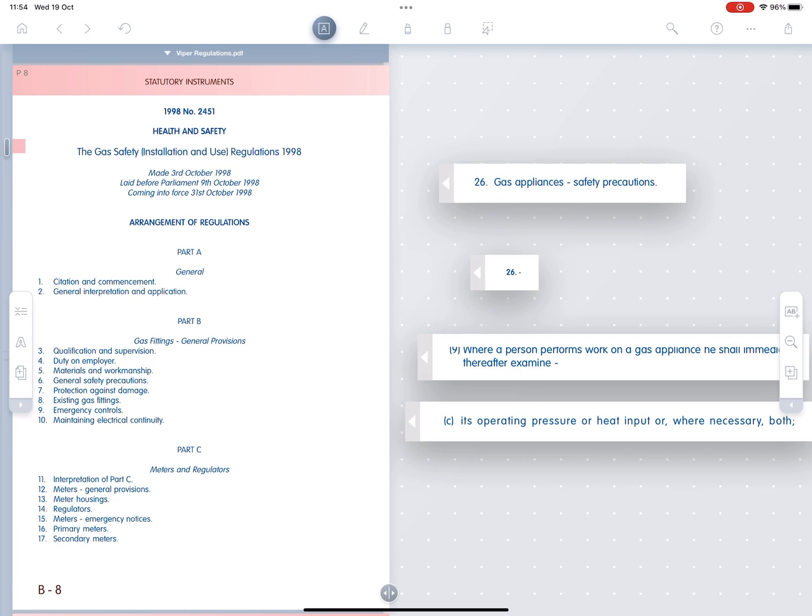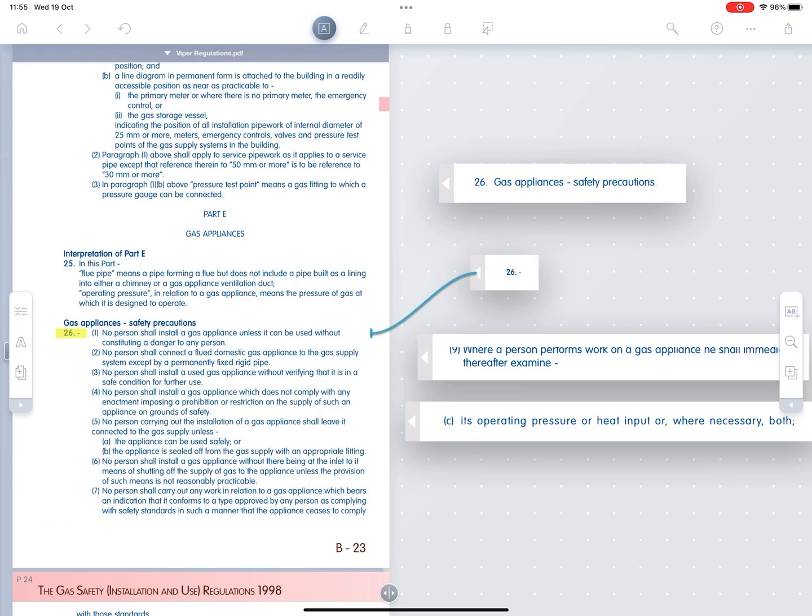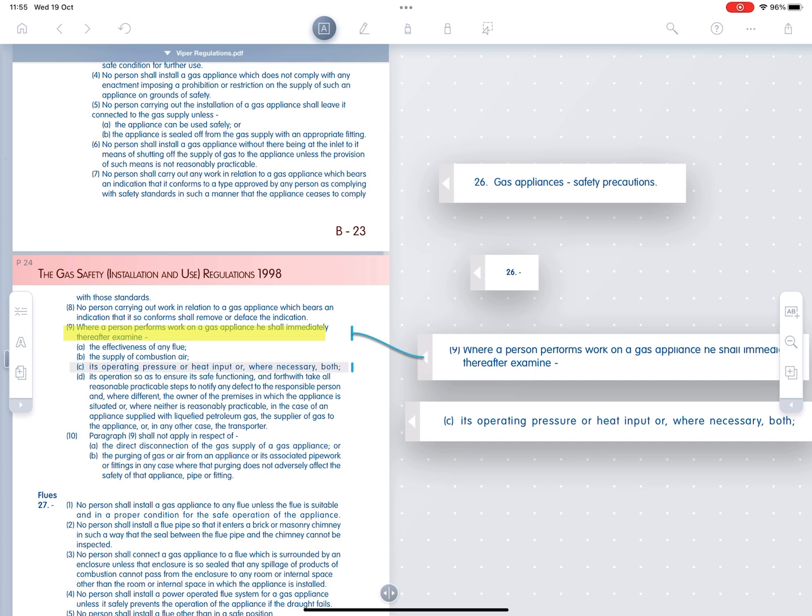Let's see how this works in practice. We go to the index at the front of the regulation section, and we find section 26, gas appliances, safety precautions. Now we've got to turn the pages, go through all the regulations until we get to part E, which contains section 26. Now we're going to have to find paragraph 9. You look down, they're all numbered. There it is. And inside paragraph 9, underneath it there, are the subparagraphs, which are lettered. And we're looking for C, and there, as simple as that, we've found exactly what we're looking for.